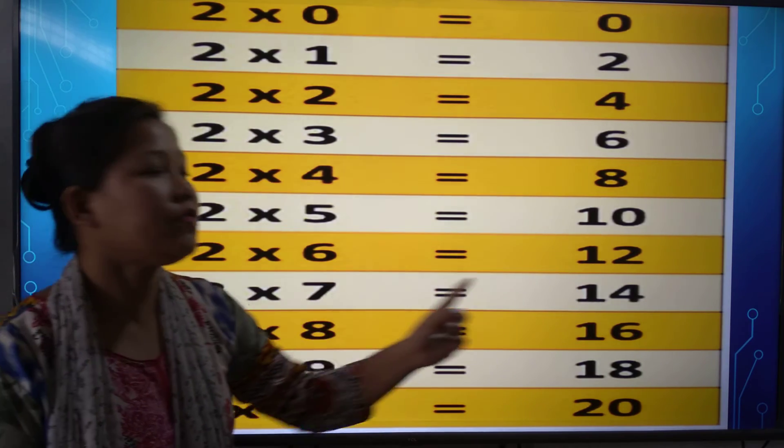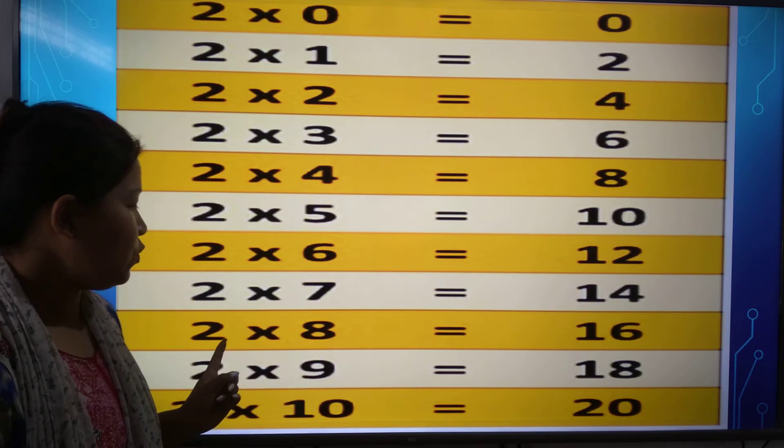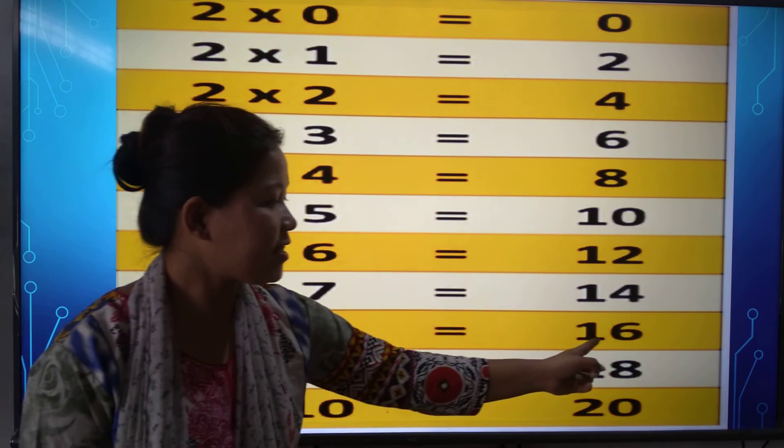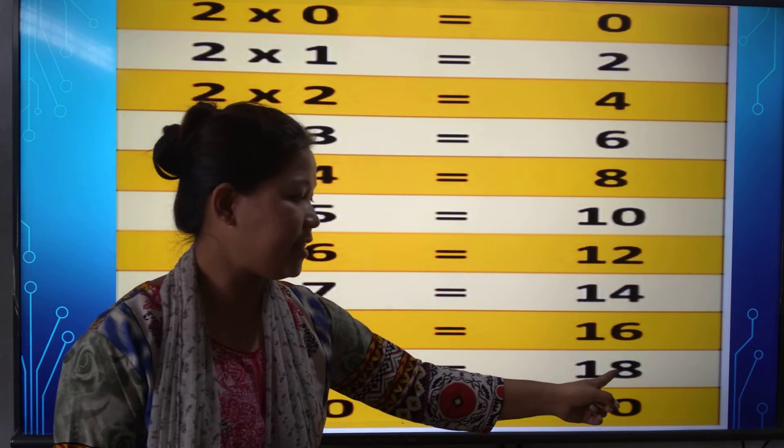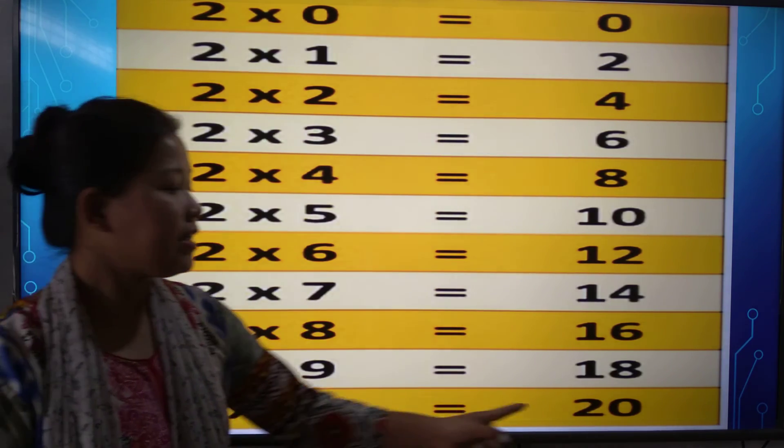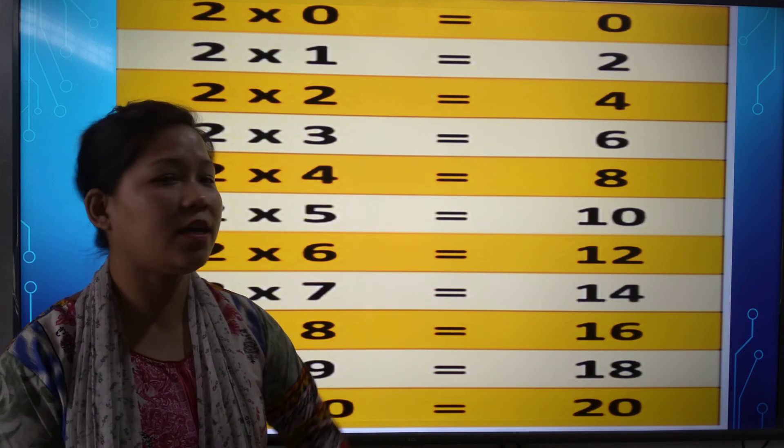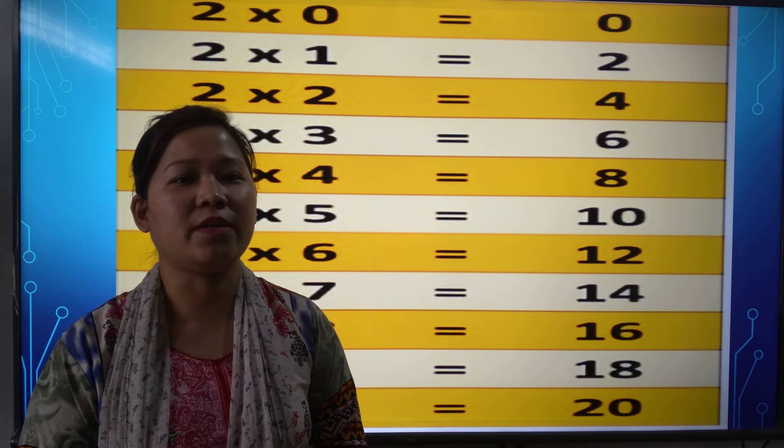2 6s are 12. 2 7s are 14. 2 8s are 16. 2 9s are 18. 2 10s are 20. So you have to learn and write in your copy. Thank you.